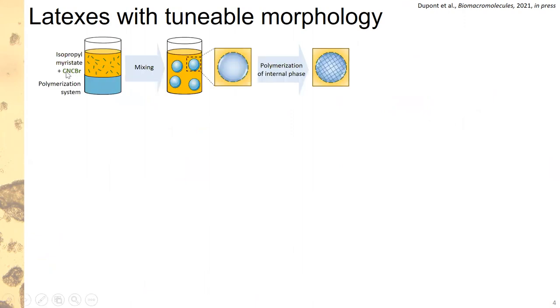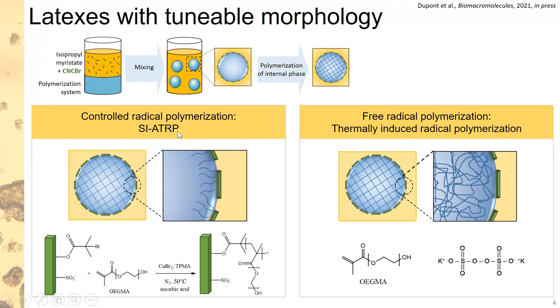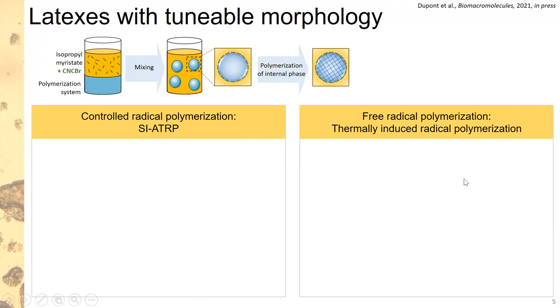The second subject we were interested in was the polymerization of the dispersed phase. Similarly to before, we dispersed the hydrophobic CNCs into an organic medium — this time a neutral-sized polymer base used in the cosmetic industry — and dispersed a polymerization system inside, obtaining an inverted emulsion stabilized by the CNCs. We studied two types of radical polymerization: surface-initiated ATRP, taking advantage of the brominated functions on the surface of the CNCs to grow polymer from the droplet surface, and free radical polymerization, with no direct link between the CNC and the polymer.